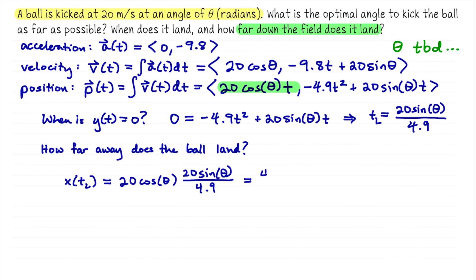All right. So that's 400 divided by 4.9. Just leave it like that. Don't try to do some decimal approximation there. Times cosine of theta sine of theta. Let's pause here for a moment because while we've found an expression for how far down the field the ball lands, we still have to answer the first question, which is what would be the best theta to maximize this distance?